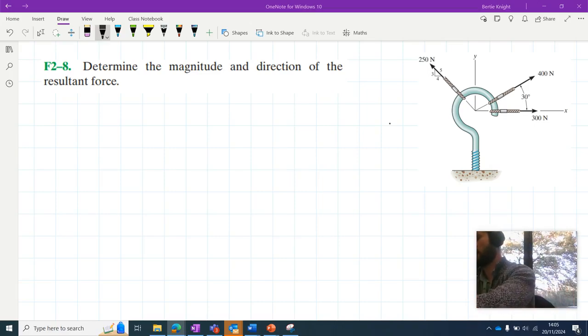We have this problem in Chapter 2 where it states determine the magnitude and direction of the resultant force. So this is a fairly simple problem. All it will involve is breaking each of these forces down into their horizontal and vertical components and then adding the horizontal components together, adding the vertical components together, determining the magnitude of the resultant force and determining its direction.